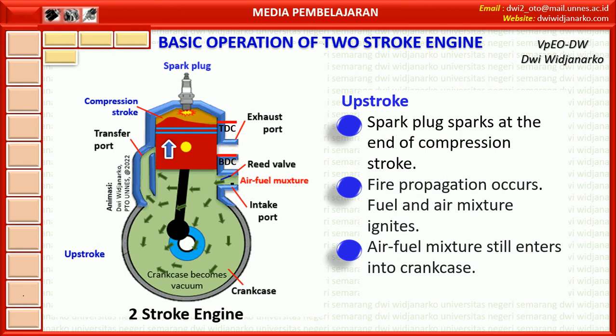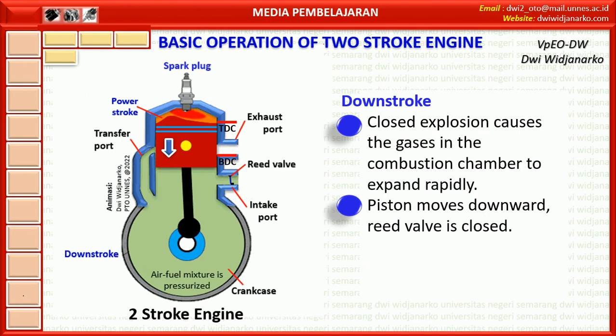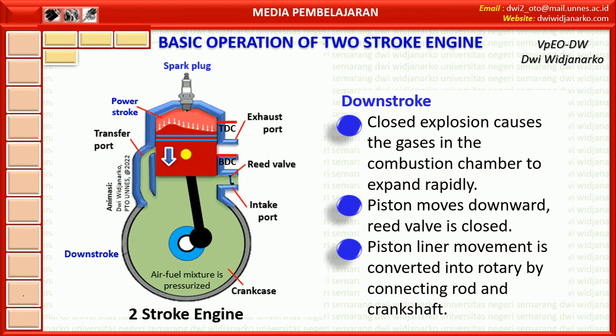A few degrees before the piston reaches top dead center, at the end of the compression stroke, the spark plug sparks. Flame propagation occurs from the spark plug around the combustion chamber, and the air-fuel mixture ignites. Below the piston, in the crank case, the air and fuel mixture continues to flow in. The power stroke begins — combustion in the cylinder causes the gases to expand rapidly, pushing the piston down and generating linear force. As the piston moves down, crank case volume decreases and pressure increases, closing the reed valve. The linear force is transmitted by the connecting rod to the crankshaft, converting it into rotary power.